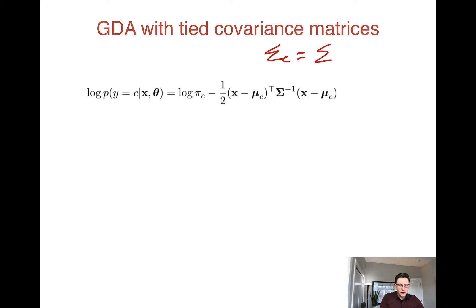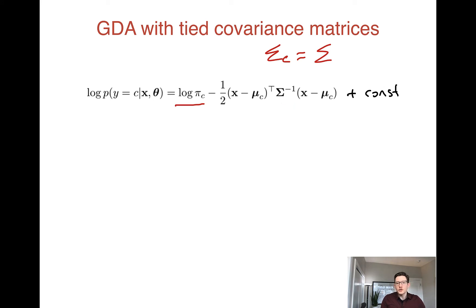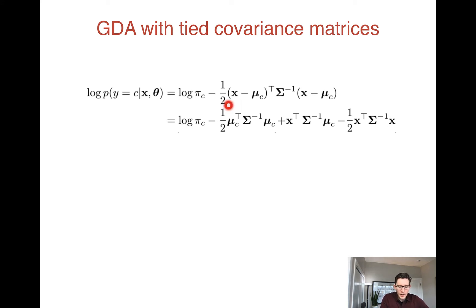With a tied covariance matrix, the posterior distribution for a given class simplifies further. The term involving the covariance matrix no longer depends on the class, so it goes into the constant. We're left with a term depending only on the class (not involving sigma) and the quadratic term (x - mu_c)^T sigma^{-1} (x - mu_c) with the common covariance matrix.